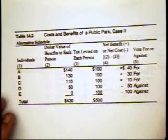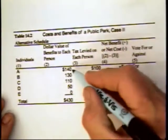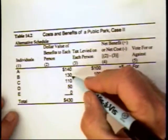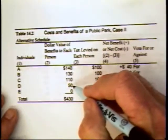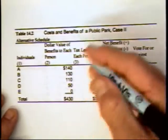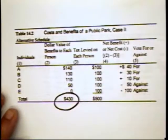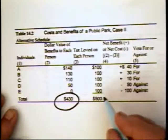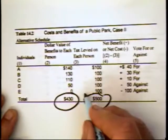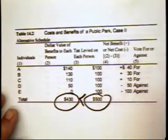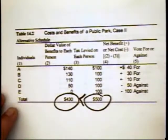Here we have a case in which the benefits are $140, $130, $110, $50, $0. The value of the benefits is equal to $430. The cost of the park is the same, $500, so the benefits are less than the cost of the park.